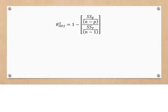One issue with the R squared value is that it is not affected by the addition of another independent variable. So to mitigate this problem, we use R squared adjusted, whose equation is 1 minus the quantity of SSE over n minus p, over SST over n minus 1.